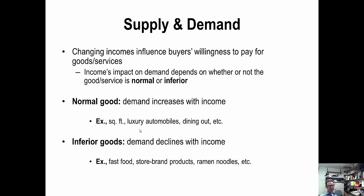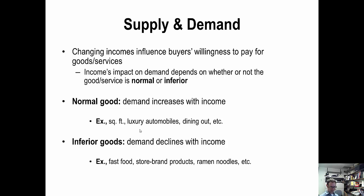Let's start with income. We need to identify two categories of goods as they relate to income: normal goods and inferior goods. Normal goods experience an increase in quantity demanded when incomes rise, and a decrease in demand when income declines. Conversely, inferior goods have the opposite relationship — quantity demanded declines as income increases.